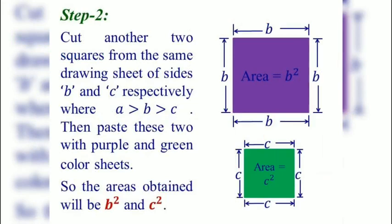Step two — cut another two squares from the same drawing sheet of sides B and C respectively, where A is greater than B, greater than C. Paste these with purple and green color sheets respectively. The areas of these will be B square and C square. The purple colored square has area B square and the green colored square has area C square units.